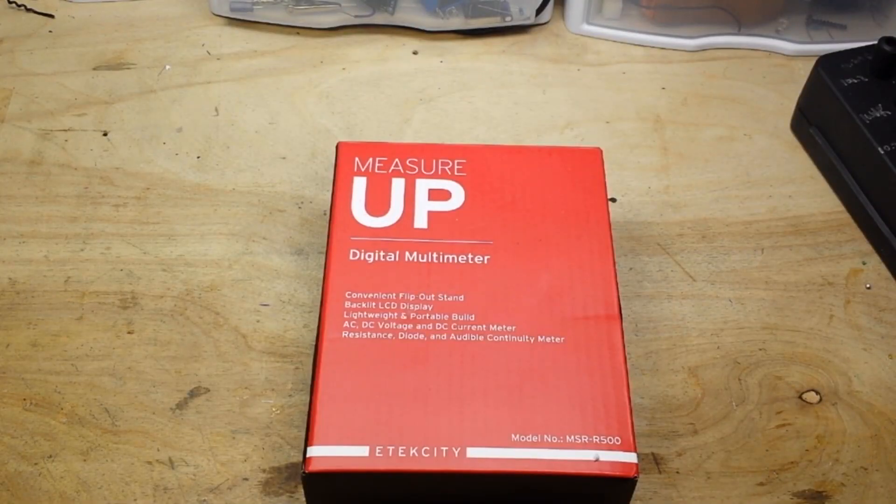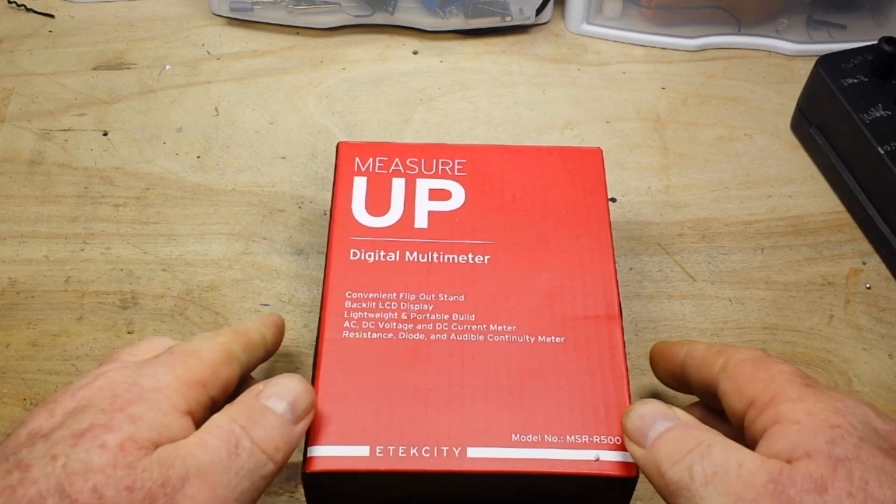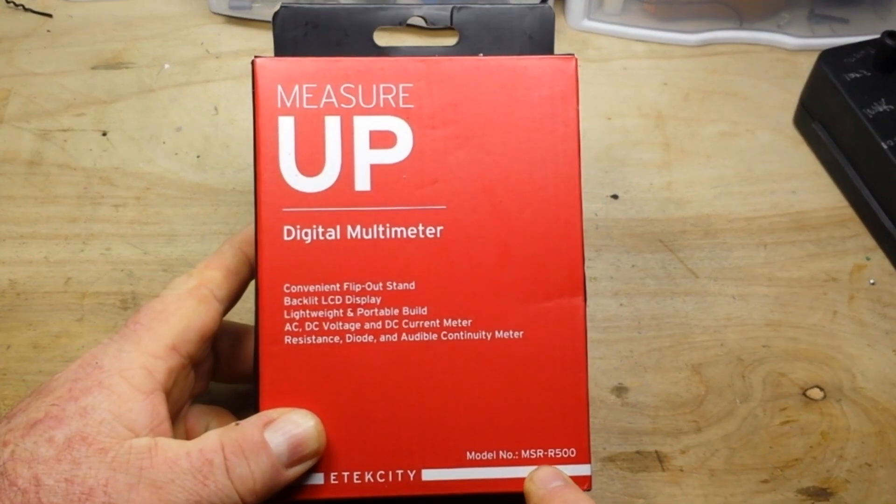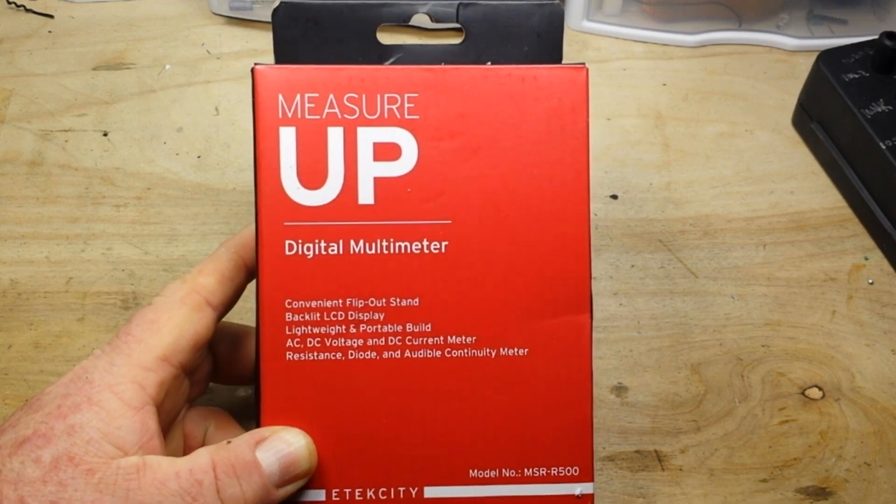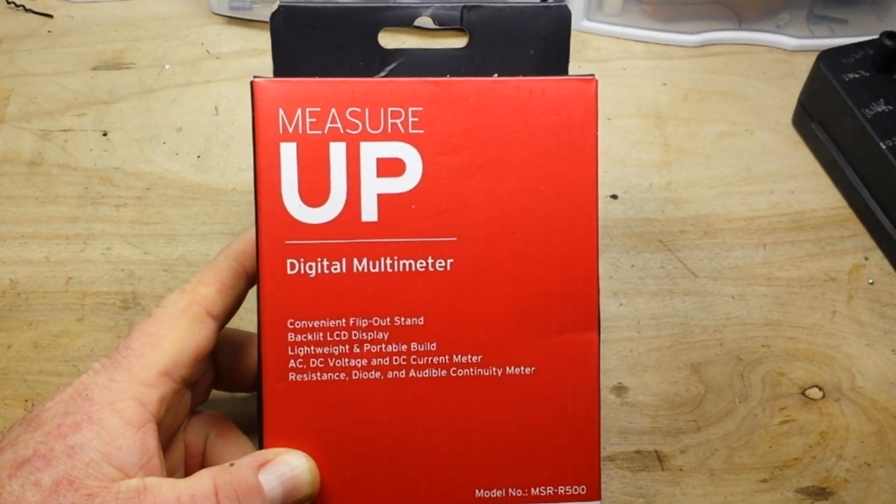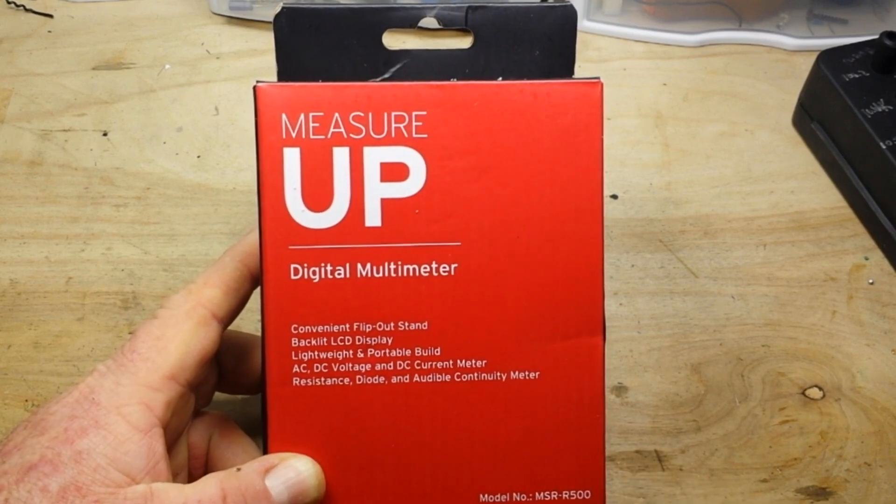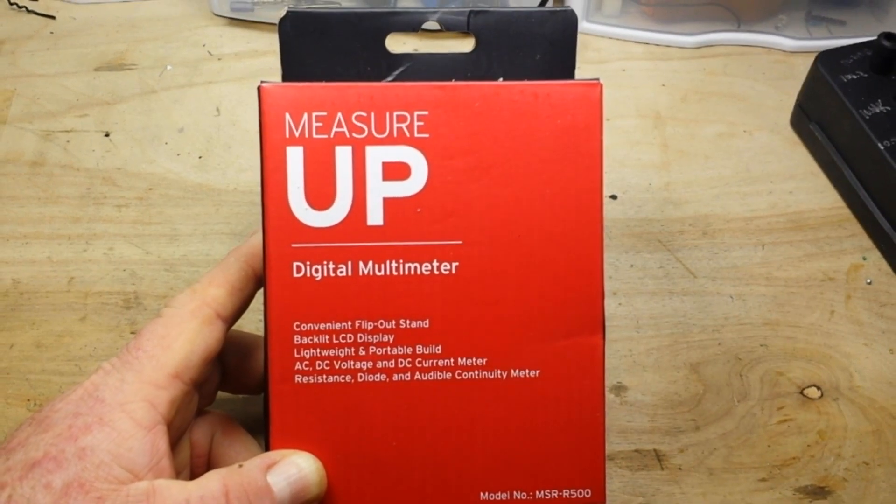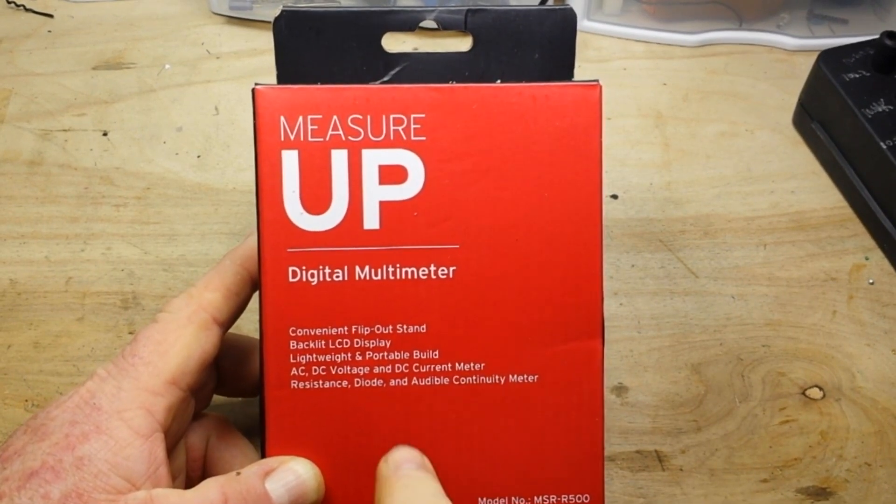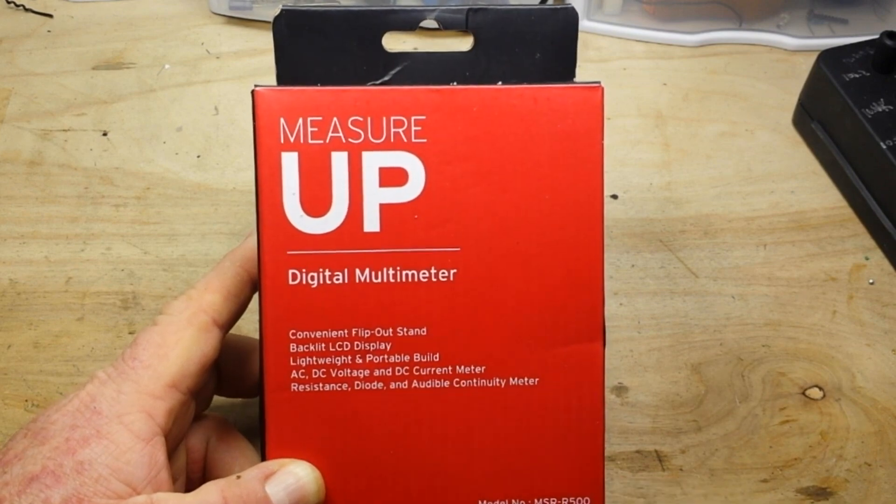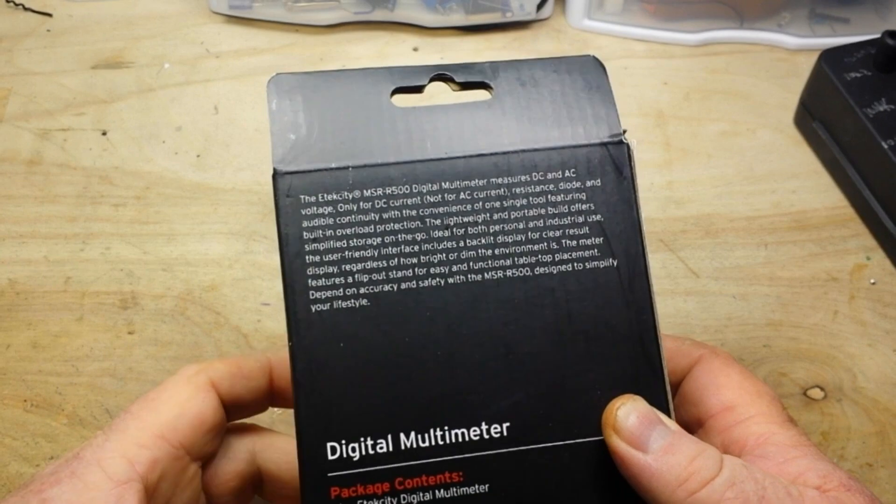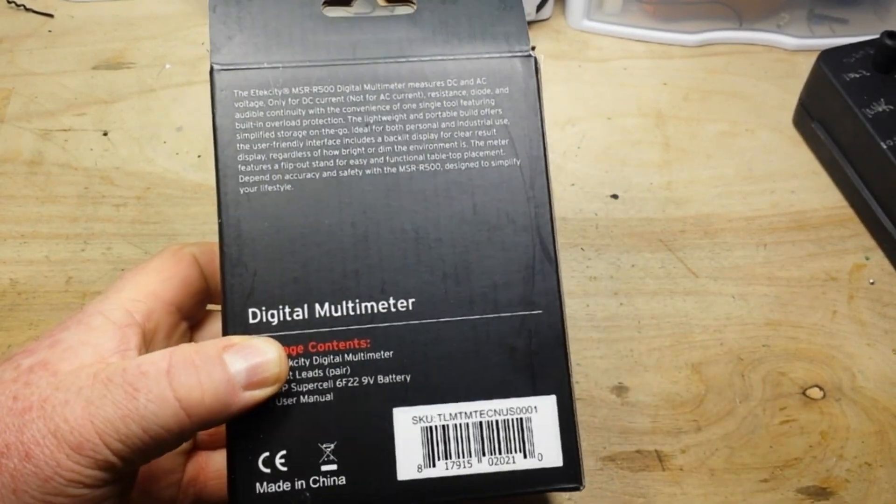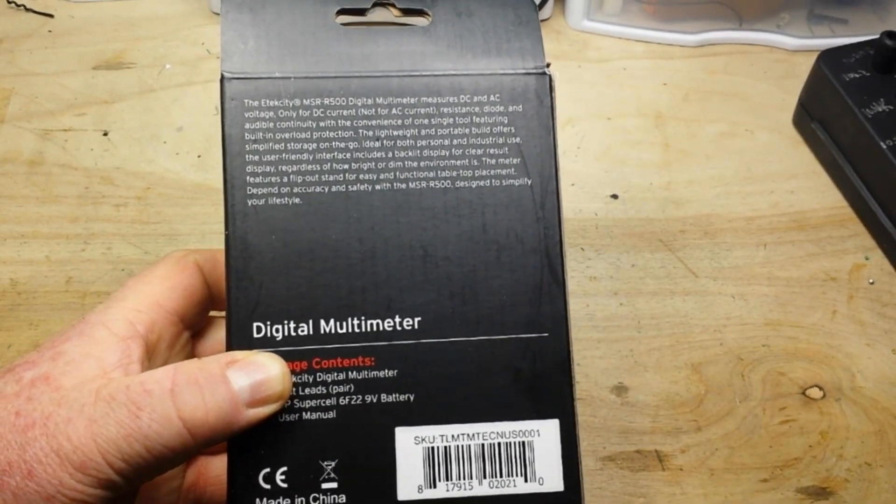Hey, what's happening guys. Today we're going to take a look at a really cheap digital multimeter. This is the MSR-R500 from Etekcity, the measure-up digital multimeter with convenient flip-out stand, backlit display, lightweight and portable. AC/DC voltage and DC current, resistance, diode, audible continuity. I bought this off of Amazon for $9.99, but as I just looked here a couple days later it's gone up to $11.50. I just love how they do that.